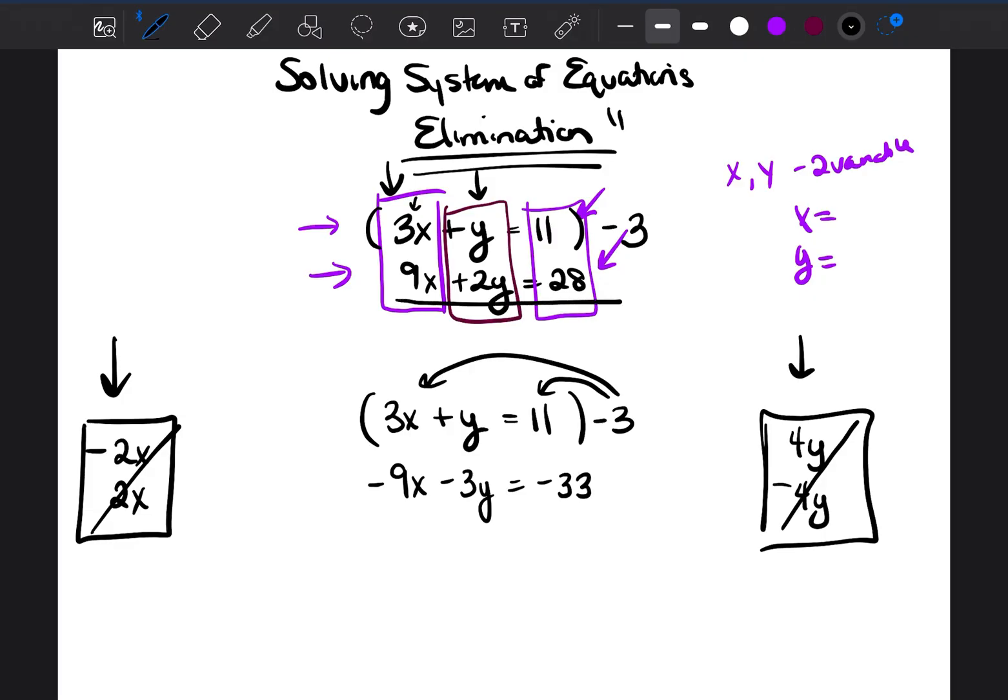So now I'm going to go ahead and bring down my other equation, 9x plus 2y is equal to 28, and now I'm going to redraw my boxes. So I'm going to make my boxes over the x's, I'm going to make my box over the y's, and I'm also going to draw my box around the constants. Okay, so when I add the negative 9x plus 9x, what happens? They cancel each other out, and the x's are eliminated. That was my goal, to solve the system of equations by elimination.